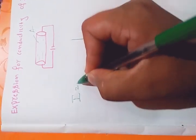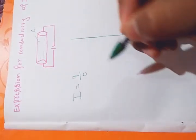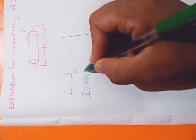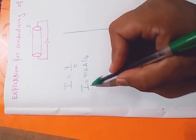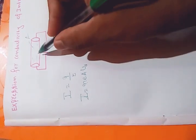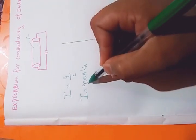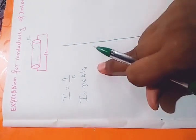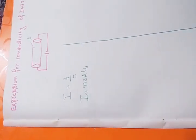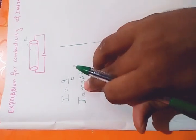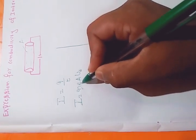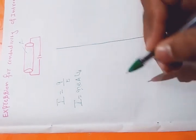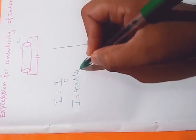Current I is nothing but charge flowing per unit time. In terms of the semiconductor parameters, I is equal to N·E·A·Vd, where N is the number of electrons and holes present inside the semiconductor, A is the area of the intrinsic semiconductor, and Vd is the drift velocity.